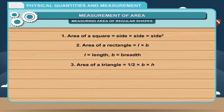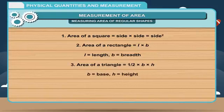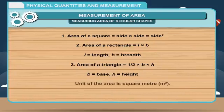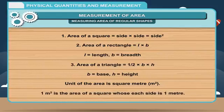3. Area of a triangle is equal to half × B × H, where B is the base and H is the height. The unit of area is square meter (m²).